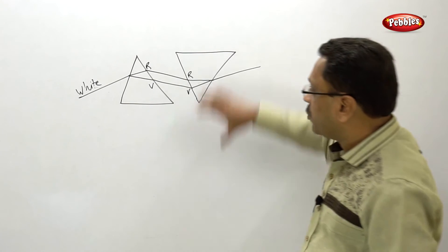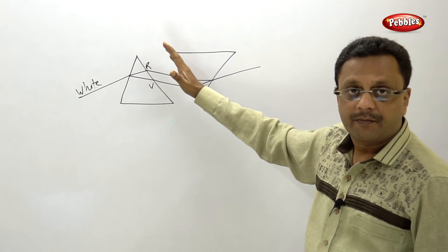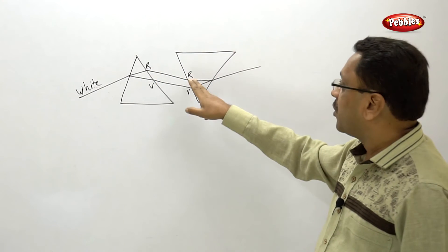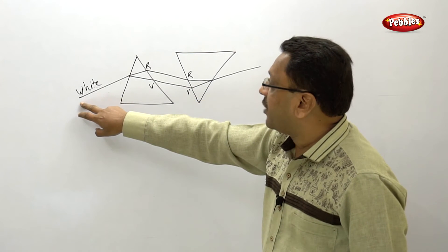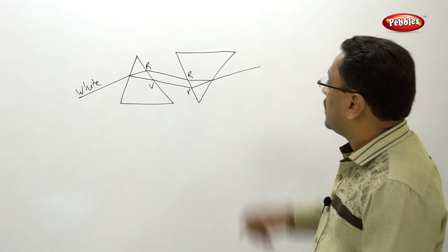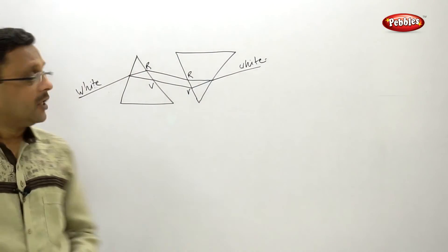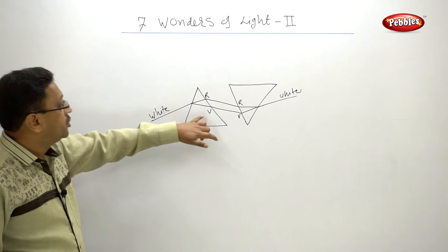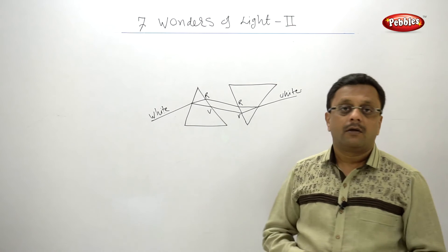He took a second prism and placed it parallel to the first prism, so that the two sides are parallel. The color spectrum now became the incident rays for the second prism. Initially the white light ray was dispersed into the spectrum, and this spectrum then recombined and he got the white light again. That means this dispersion and color band was not due to just the glass or the prism — it is an inbuilt phenomenon of white light.